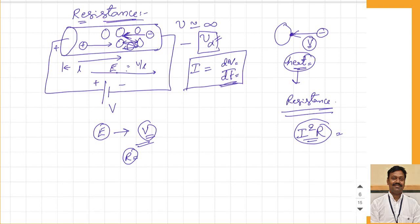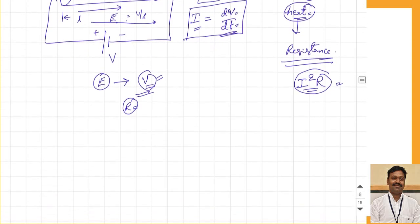The basic concept of resistance is: whenever a charge tries to move because of the electric field, it collides with neighboring atoms and changes direction. Because of this the velocity does not reach infinity — it moves at some mean velocity called drift velocity. Thus current, equal to dq/dt, is limited, and how many charge carriers pass per second depends on the potential applied and the resistance of the material.